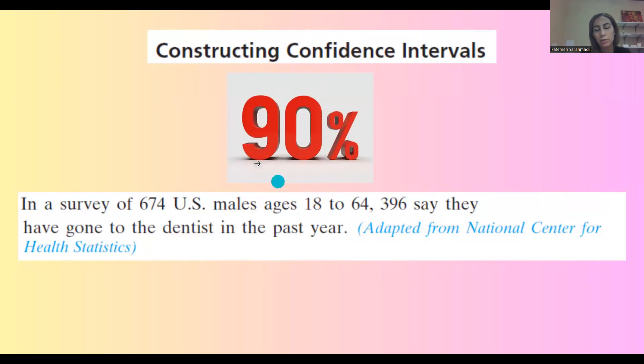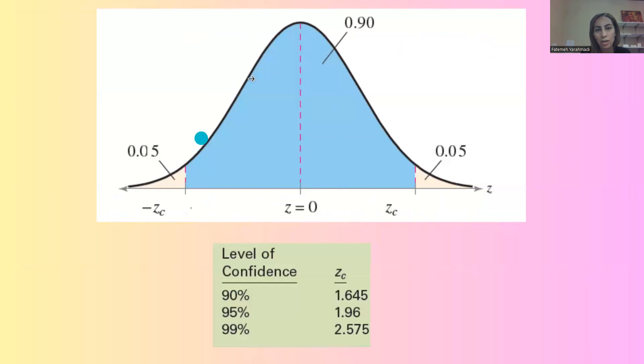When you're talking about a 90% confidence interval, you're basically talking about this normal distribution. 90% of the area is in between 5% to the left and 5% to the right.